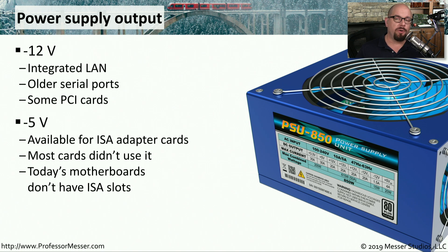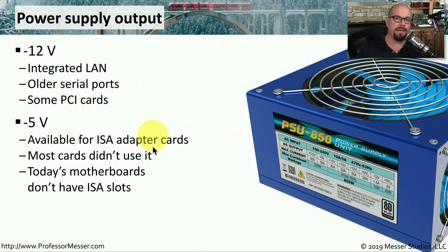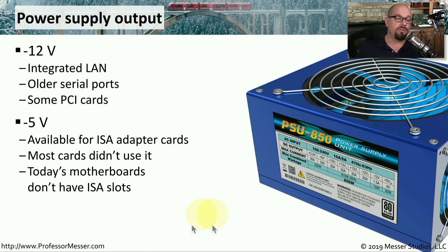Negative 5 volts can be found on some older power supplies, but modern power supplies probably won't provide it. This is because negative 5 volts was most commonly used for older ISA bus adapter cards, and even some of those didn't use it. Modern motherboards don't have ISA slots, and therefore don't require negative 5 volts.